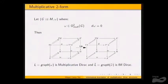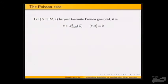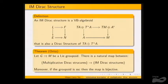Given a groupoid, we have the Lie algebroid. If we think of a multiplicative two-form as a morphism, then the multiplicativity condition is the same as saying this map is a groupoid morphism. We can apply the Lie functor to that morphism and obtain a Lie algebroid morphism that also respects the underlying vector bundle structure — this is a VB algebroid morphism. What are these elements? This is just an IM Dirac structure: a Dirac structure on the generalized tangent of our algebroid that is also a VB algebroid.